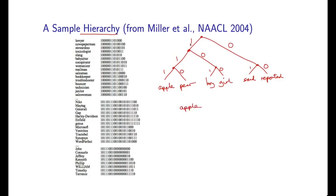So now if I think about these words, apple corresponds to the bit string 1, 1, 1. Pear corresponds to the bit string 1, 1, 0. Boy is 1, 0, 1. Girl is 1, 0, 0.